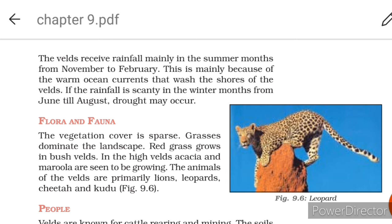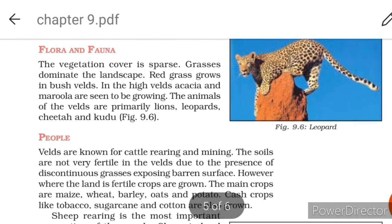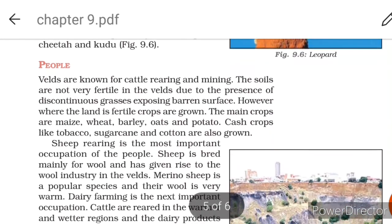The vegetation cover is sparse and grasses dominate the landscape. Red grass grows in the bush velds, while blue-white grass is found in others. In the high velds, acacia and merula are seen growing. The animals of the velds are primarily lions, leopards, cheetah and kudu.